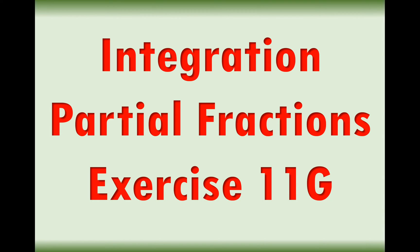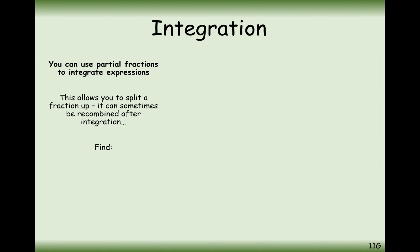Hello there and welcome to this series of videos going through the content of A-level maths. Here we're looking at integrating partial fractions so we can answer questions from exercise 11g. What we're going to be doing is splitting up a big fraction using partial fractions and then integrating the separate components of those partial fractions. In this case we're going to split up (x minus 5) over (x plus 1)(x minus 2) into two separate fractions and then integrate those fractions separately.